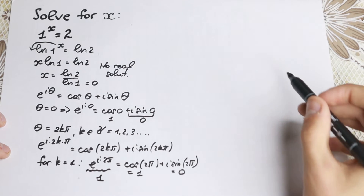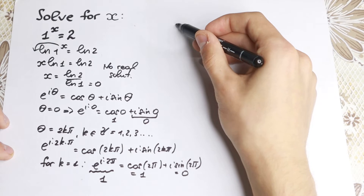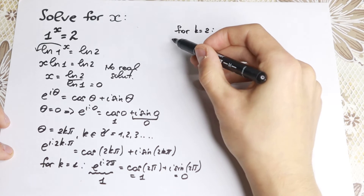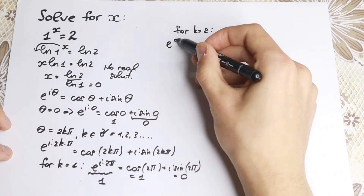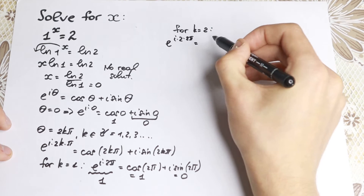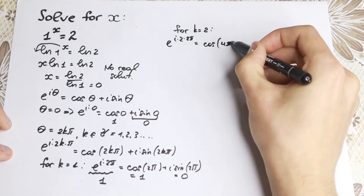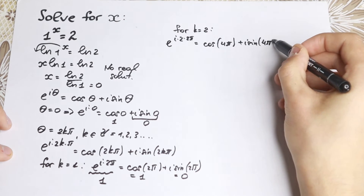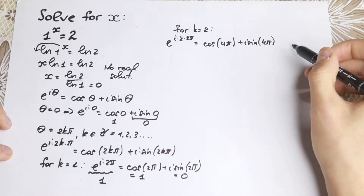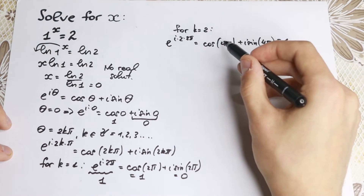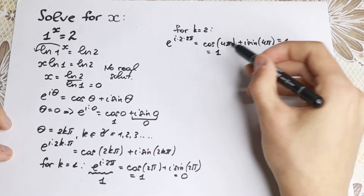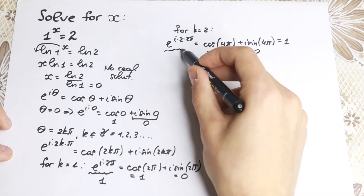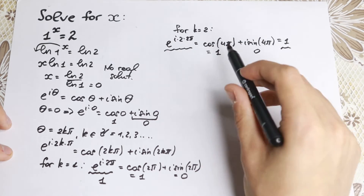For k equal to 2, we have e to the power i times 4 pi equals cosine 4 pi plus i sine 4 pi. Cosine 4 pi equals 1 and i sine 4 pi equals 0, so again the expression equals 1. And for k equal to 3, e to the power i times 6 pi equals cosine 6 pi plus i sine 6 pi, which also equals 1.